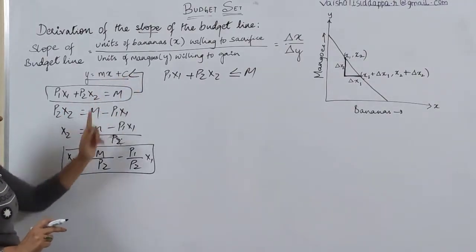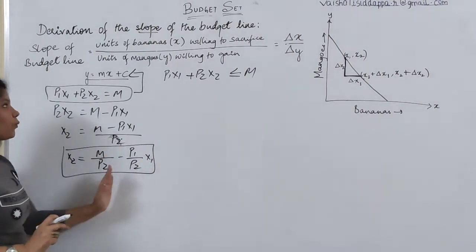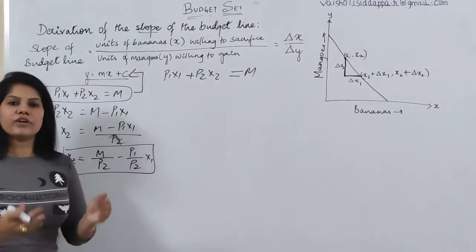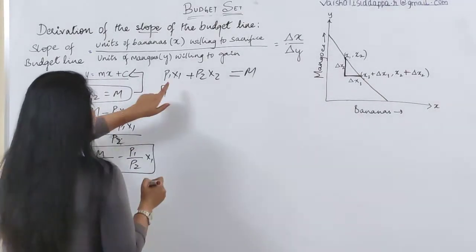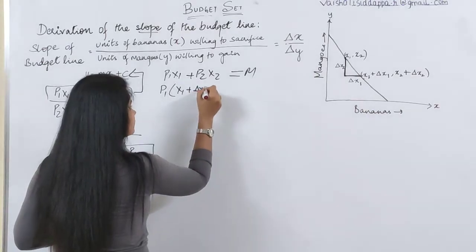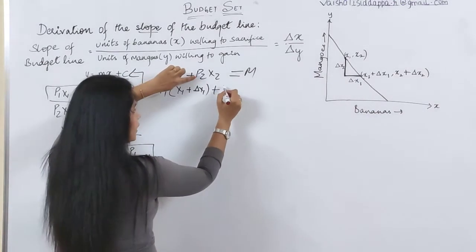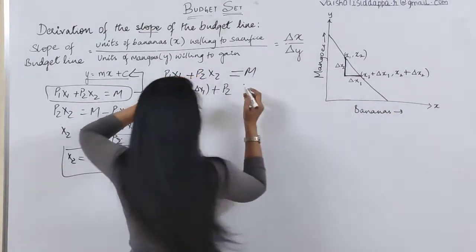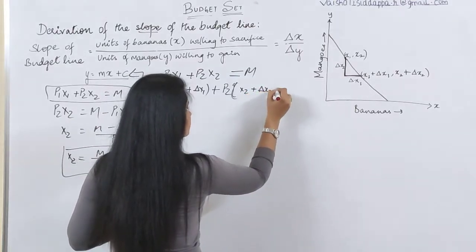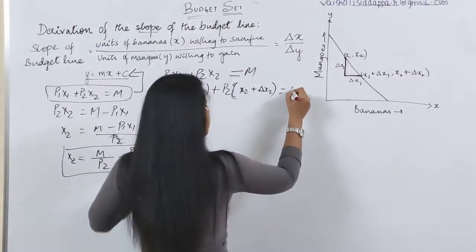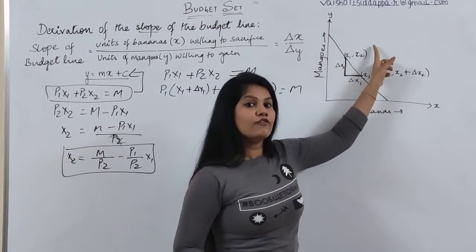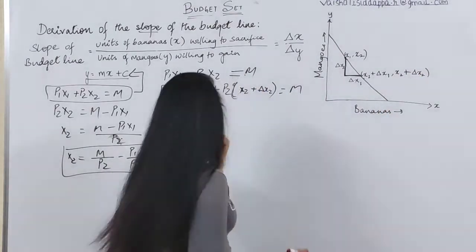This final equation, x2 = m/p2 − (p1/p2)·x1, is in the form y = mx + c. That is how we derive the budget line equation. Now for the slope derivation, in the budget equation p1·x1 + p2·x2 = m, we substitute x1 with (x1 + Δx1) and x2 with (x2 + Δx2), keeping the right-hand side equal to m.